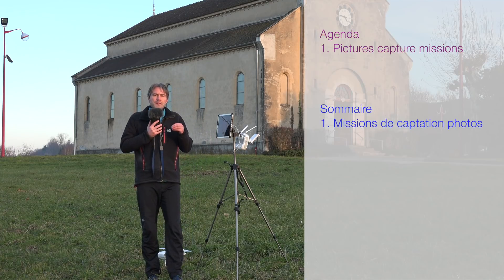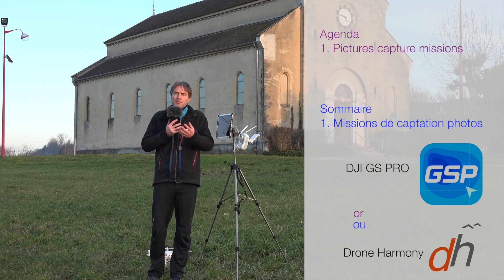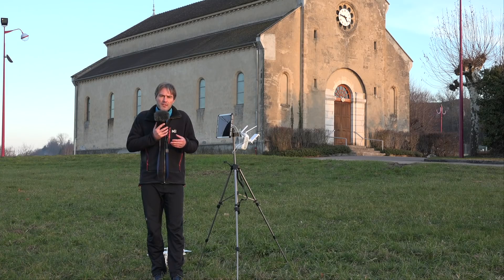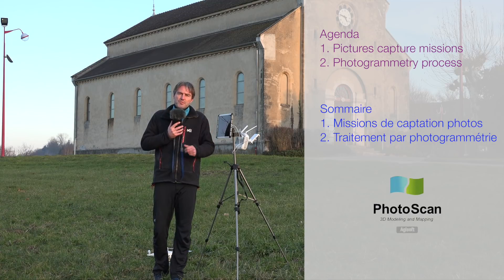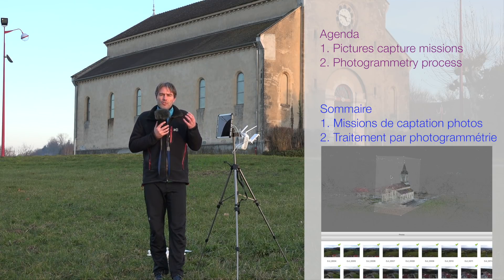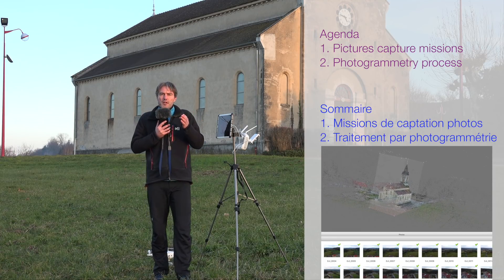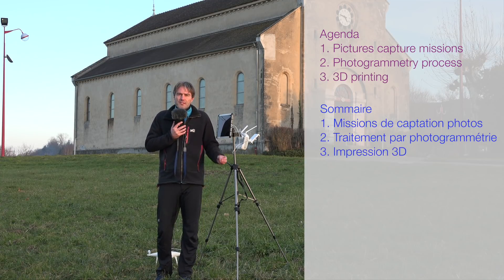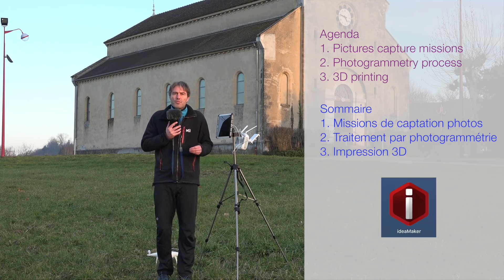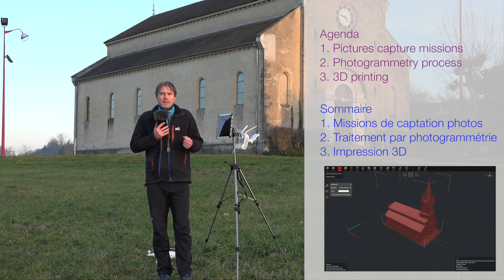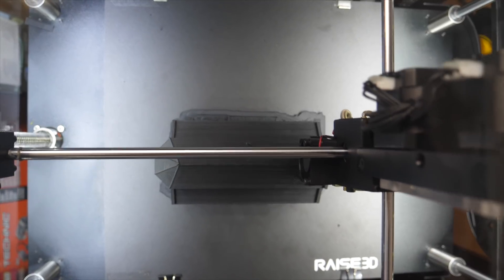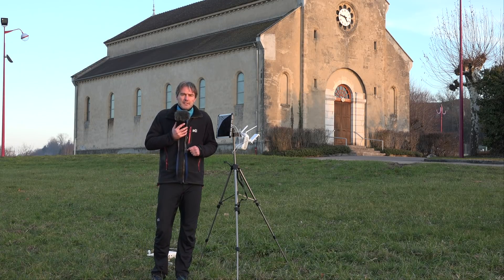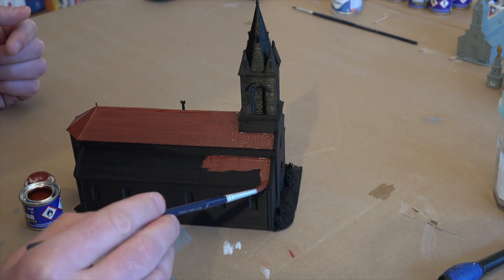Les étapes vont être les suivantes : tout d'abord on va planifier des missions de mapping pour faire les bonnes photos de l'église en utilisant des DJI Pro. À partir de cette série de photos on va aller dans Agisoft Photoscan — j'utilise la version standard — pour créer le modèle 3D. On va ensuite exporter un fichier .obj qu'on va injecter dans Ideamaker, un logiciel de CFAO pour imprimantes 3D, et enfin lancer l'impression. Il restera une étape de mise en peinture pour donner un aspect ressemblant à l'église.